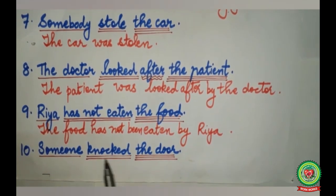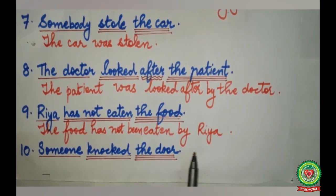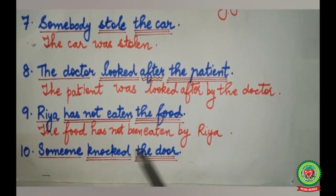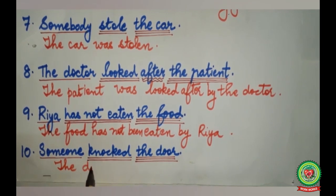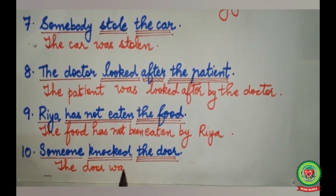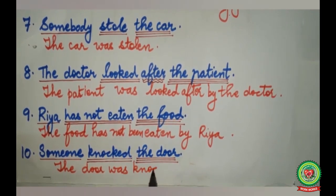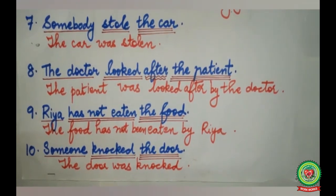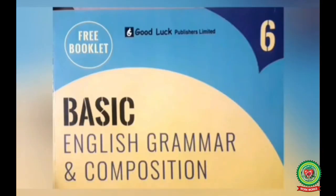Last sentence: Someone knocked the door. In the same way, we can omit someone. The answer is: The door was knocked. I hope you all have understood the rules of active and passive voice. Now follow these rules and do related exercises of chapter 17, active and passive voice, from your Basic English Grammar and Composition book. Thank you.